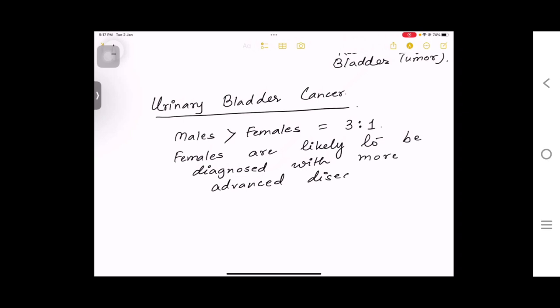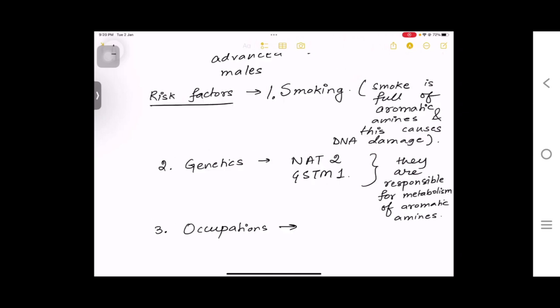This is the rule of nature - if something is more common, it will have less severity. If it's less common, it will be more severe. Let's move on to the risk factors of urinary bladder cancer. First is smoking. The smoke is full of aromatic amines and that can cause DNA damage.